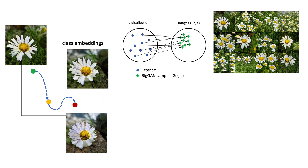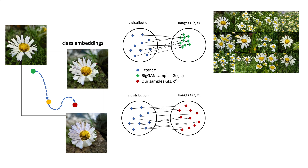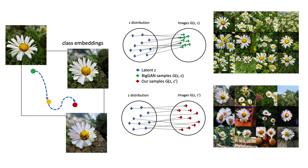Here, the updated class embedding changes the background of daisies from green grass to ground soil. Note that the pose of the flower remains the same. Effectively, with only a change in embedding, the latent vectors are remapped to more spread-out points, producing a more diverse set of samples.